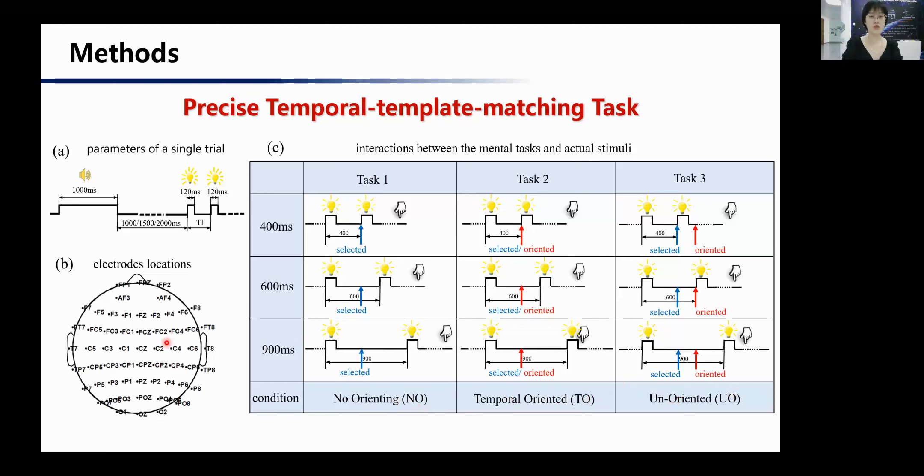EEG data of 42 healthy subjects were recorded. Behavioral performances, inter-trial coherence, and event-related spectral perturbation were analyzed. Repeated ANOVA was conducted, and Bonferroni correction was used when necessary.